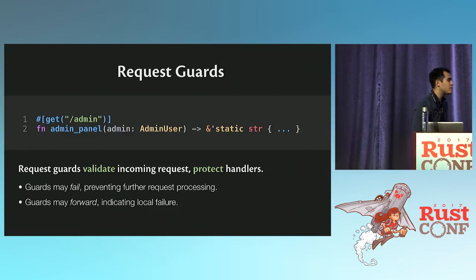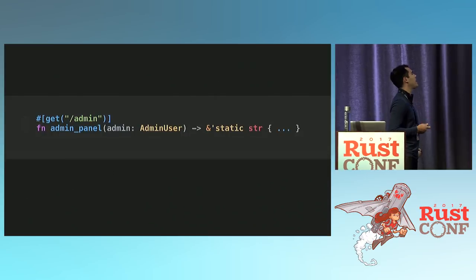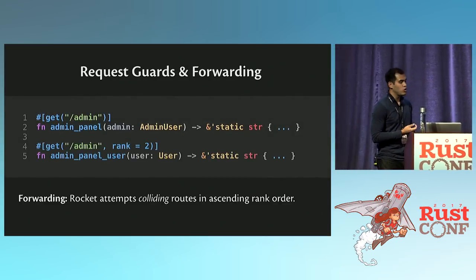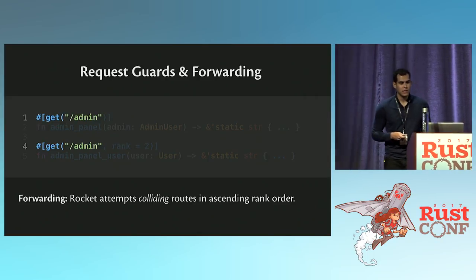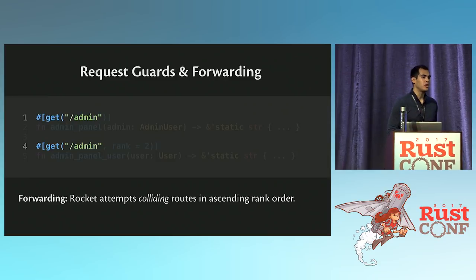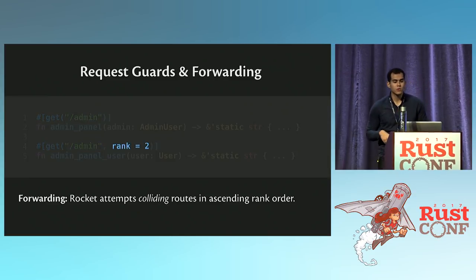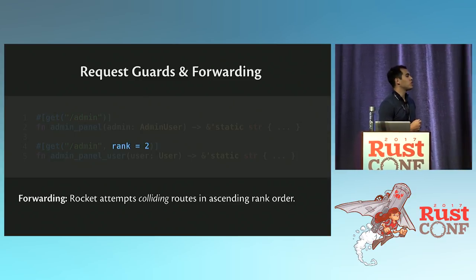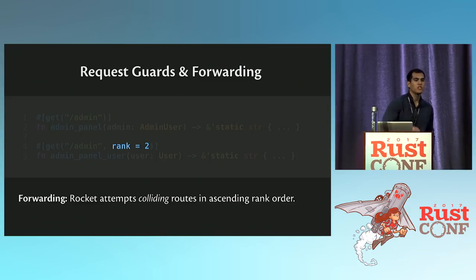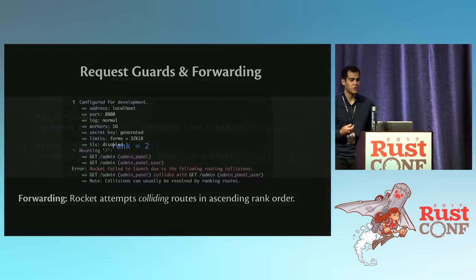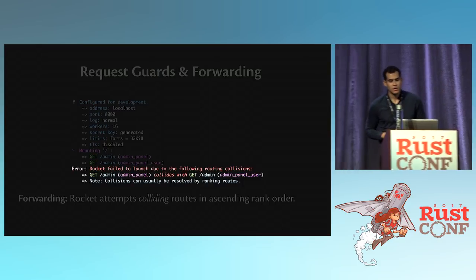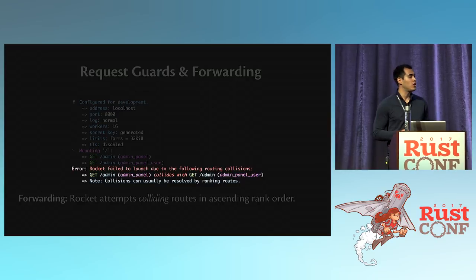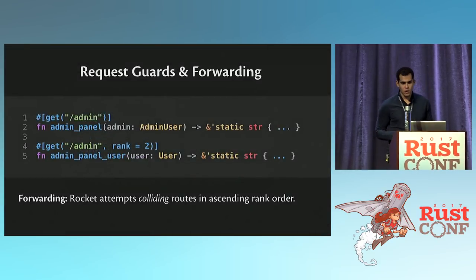When you forward something, Rocket will try the next route that collides. Here we have two routes that both match the admin path for GET requests, so these collide. If you were to actually run this, Rocket would say 'hey, these collide.' But we can fix that collision by ranking these routes — we can add `rank = 2` to our routes. When there's a collision, try the thing with the lowest rank, then the next highest, and so on. If you do this wrong, Rocket gives you a helpful error saying it failed to launch because there are collisions, and did you know about ranking?